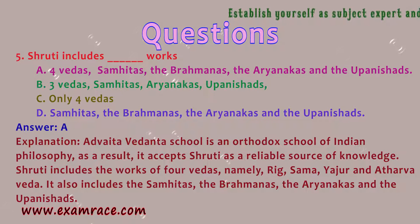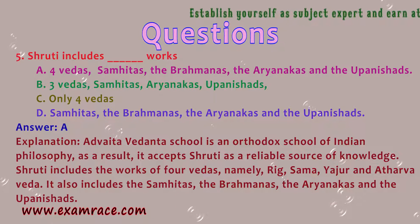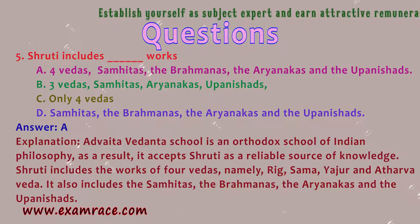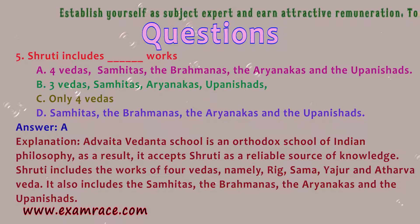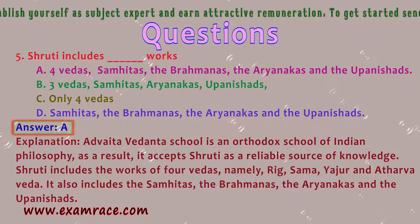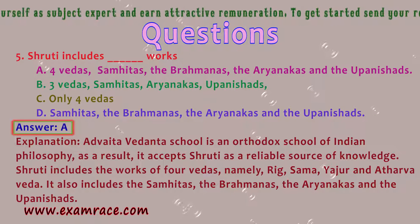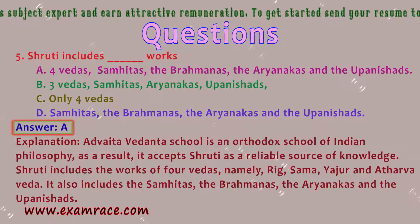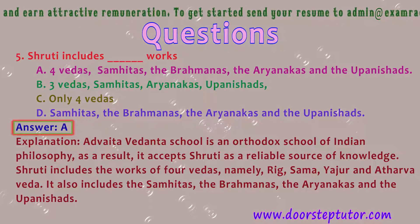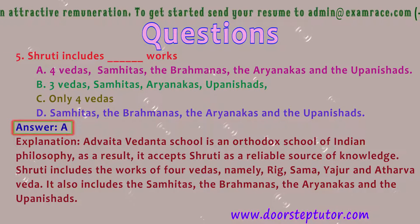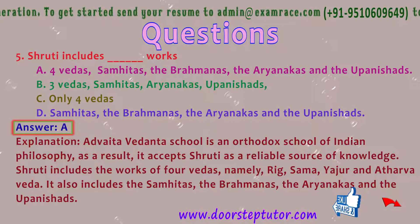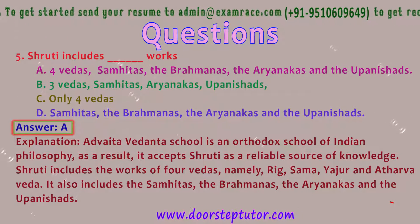Question 5: Shruti includes — the correct answer is A: the four Vedas (Rig, Sam, Yajur, and Atharva Veda), the Samhitas, the Brahmanas, the Aranyakas, and the Upanishads. The Advaita Vedanta school, as an orthodox school of Indian philosophy, accepts Shruti as a reliable source of knowledge.